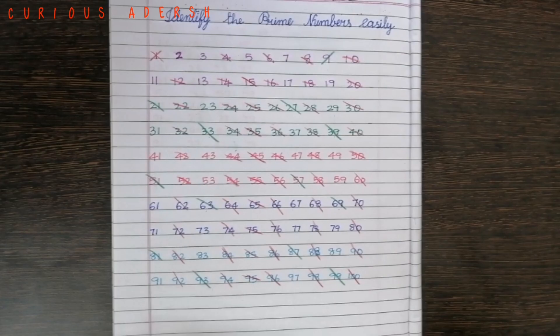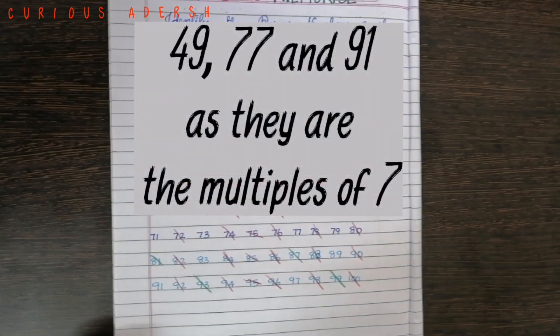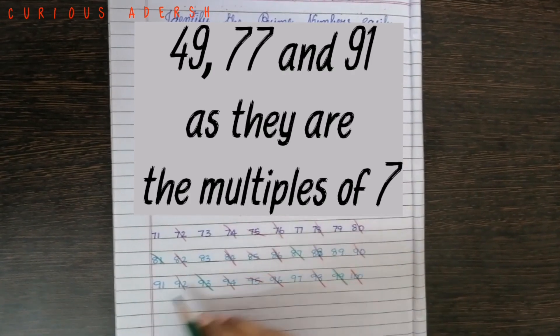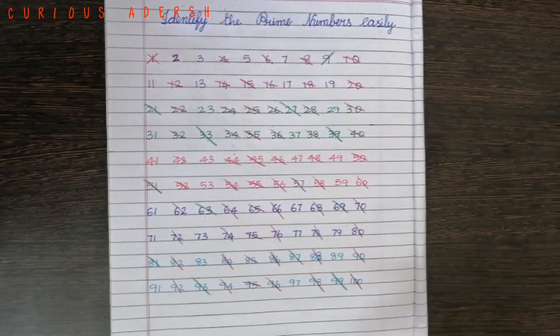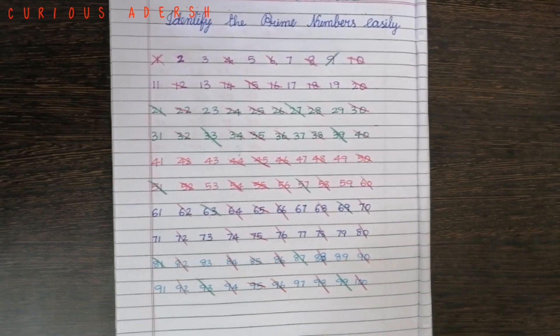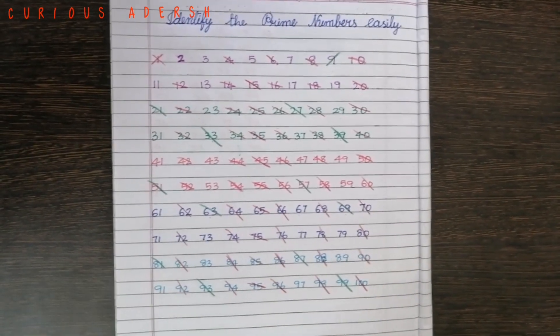Now we have to cancel only 3 numbers. The numbers are 49, 77 and 91 as they come in the table of 7. Isn't it easy to remember these 3 numbers? Yes. Let's cancel them.